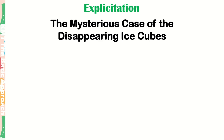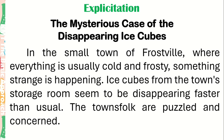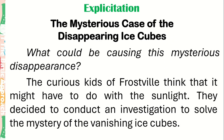Explicitation. Together, let us read the story: The Mysterious Case of the Disappearing Ice Cubes. In the small town of Frostville, where everything is usually cold and frosty, something strange is happening. Ice cubes from the town's storage room seem to be disappearing faster than usual. The townspeople are puzzled and concerned. The curious kids of Frostville think that it might have to do with the sunlight, and they decided to conduct an investigation to solve the mystery.